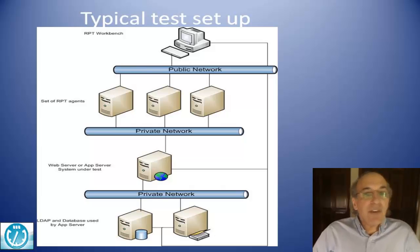However, the agents should typically communicate over a private network to the web server, and the web server or app server should also talk over a private network to the back-end LDAP and database server. The reason for that is that you want predictable and repeatable results. If you're running over a public network where someone could be streaming an MP3 from a music server, you don't want unexplained traffic on your private network while you're running a test because that way it allows you to get repeatable results. So it's best to run over a private network from the agents to the web server.